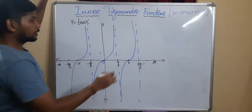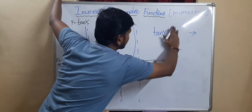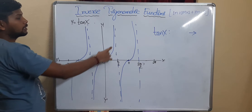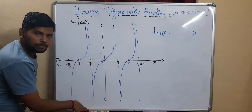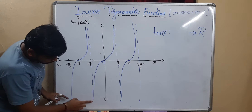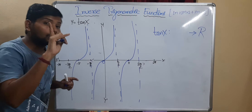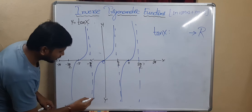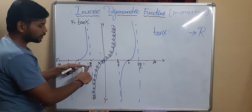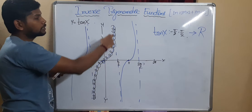Now concentrate on the domain and range of tan(x). Looking at the board, the graph moves from which point to which point — you can see the line goes from positive infinity to negative infinity. For that reason, the range of tan(x) is the real number system, because the graph travels from −∞ to +∞. The domain covers one complete cycle: from −π/2 to +π/2.